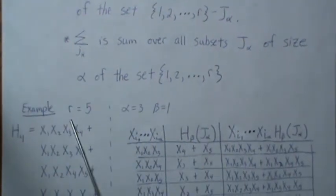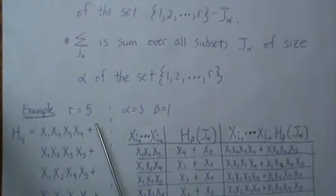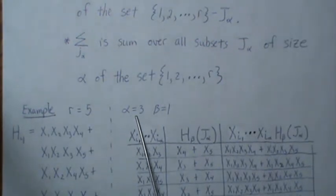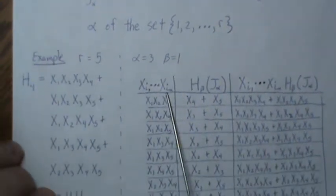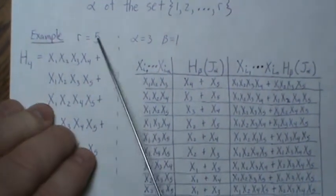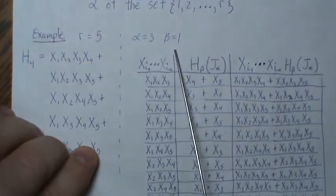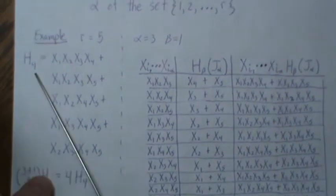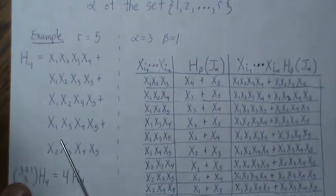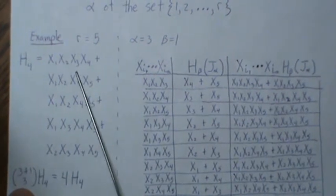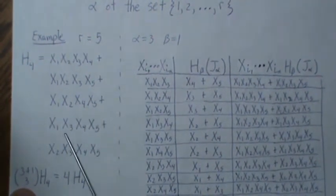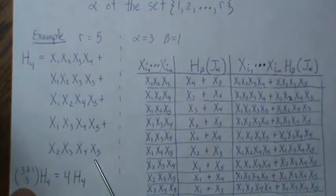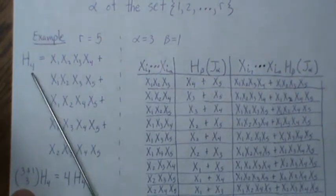Let R be 5, so we have X1 through X5. Let alpha be 3 and beta be 1, so we look at H4 since 3 plus 1 equals 4. H4 means all combinations of size 4 from {1,2,3,4,5}: that's {1,2,3,4}, {1,2,3,5}, {1,2,4,5}, {1,3,4,5}, {2,3,4,5}, all summed up. That's H4. In the theorem, the right side is (alpha plus beta choose alpha) times H4, which is 4 choose 3 equals 4, so it's 4 times H4.